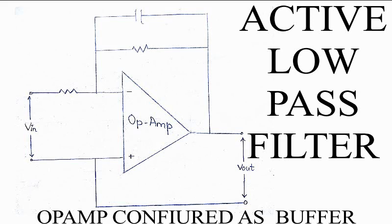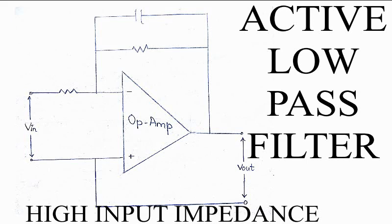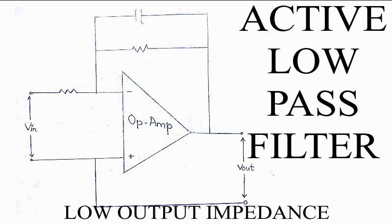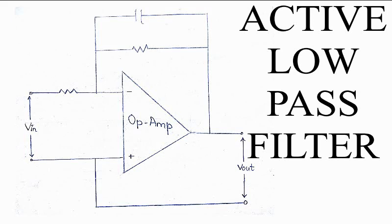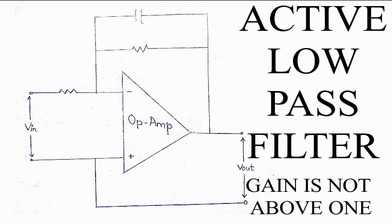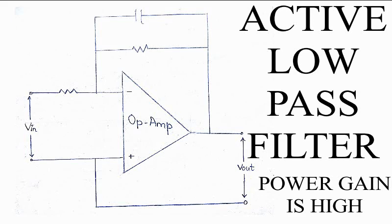The advantage of this configuration is that the op-amp's high input impedance prevents excessive loading on the filter output, while its low output impedance prevents the filter's cutoff frequency point from being affected by changes in the impedance of the load. While this configuration provides good stability to the filter, its main disadvantage is that it has no voltage gain above 1. However, although the voltage gain is unity, the power gain is very high as its output impedance is much lower than its input impedance.